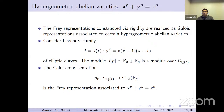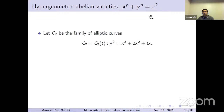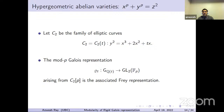For x^P + y^P = z^R specialized to R = 2, we can write down the family of elliptic curves y^2 = x^3 + 2x^2 + Tx. Again, if T is not equal to 0, 1, or infinity, we get an actual elliptic curve, and we take the associated mod-p representation. This is the Frey representation that can be constructed explicitly in this way.